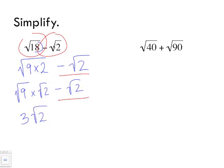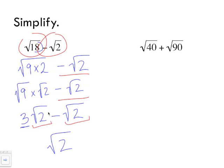We carry the minus radical 2 along, and now this looks just like our previous examples. We can simplify because both radicals are radical 2. The radical 2 doesn't change — only the numbers in front are affected by the subtraction. So it's 3 minus 1, which gives 2. The answer is 2 radical 2.